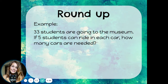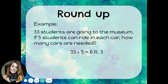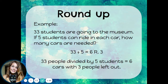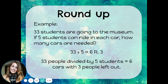33 students are going to the museum. If five students can ride in each car, how many cars are needed? So this division problem is 33 divided by five, which is six remainder three. We've divided those 33 people into groups of five. And when we did that, we needed six cars, but we had three people left out. That's what the remainder means here — it means we filled six cars, but there's still three people standing there, not in a car.